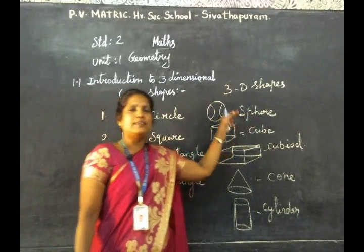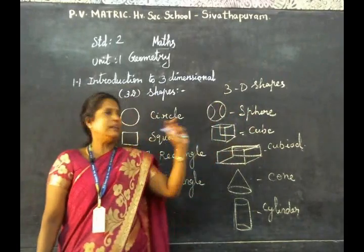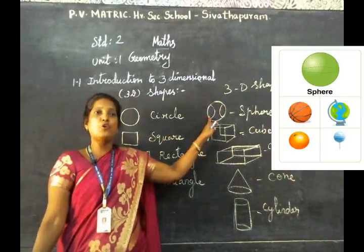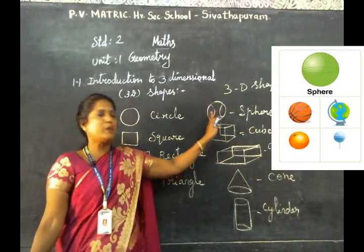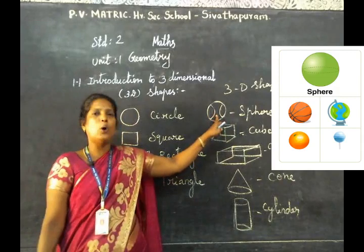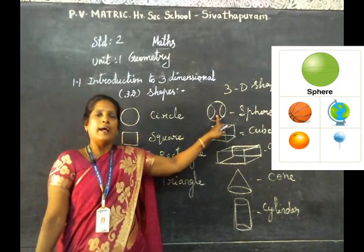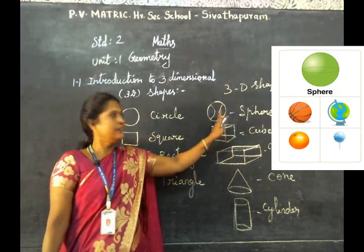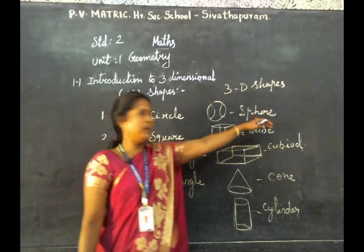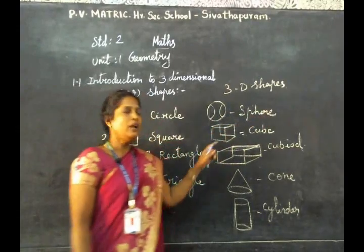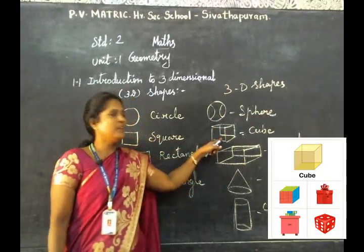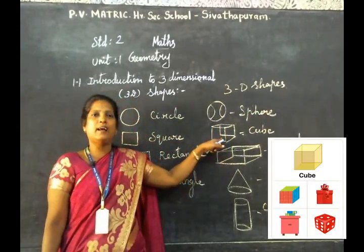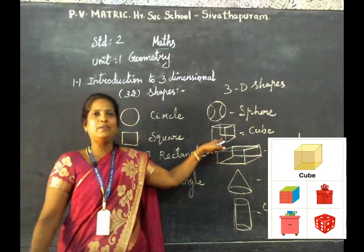For example, sphere shape — what fruits are sphere shaped? Orange, guava, lemon are spherical shapes. Cube shape is dice — dice is a cube shape.